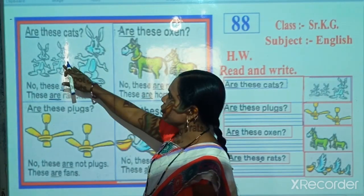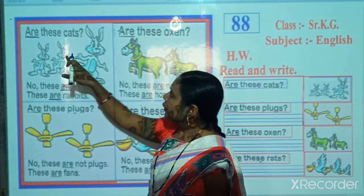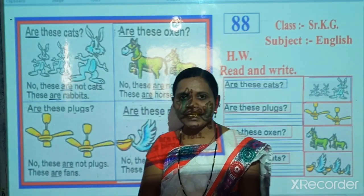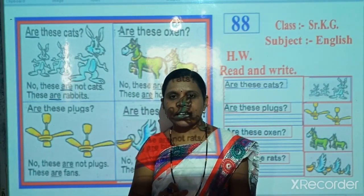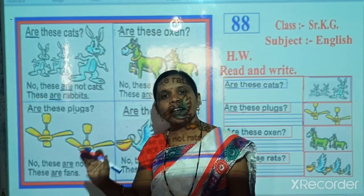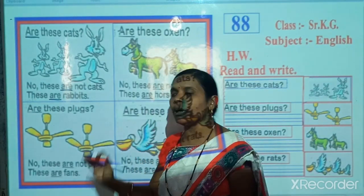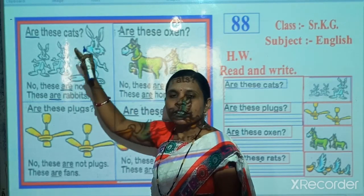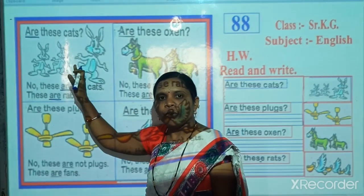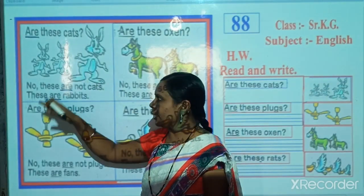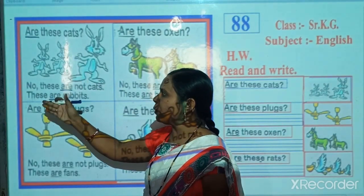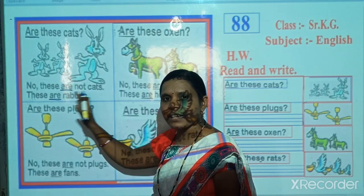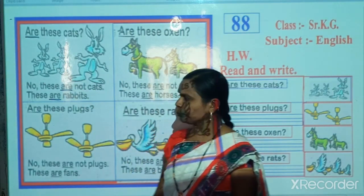If here are cats, then we will say: Yes, these are cats. But here are rabbits. So we reply: No, these are not cats. These are rabbits.